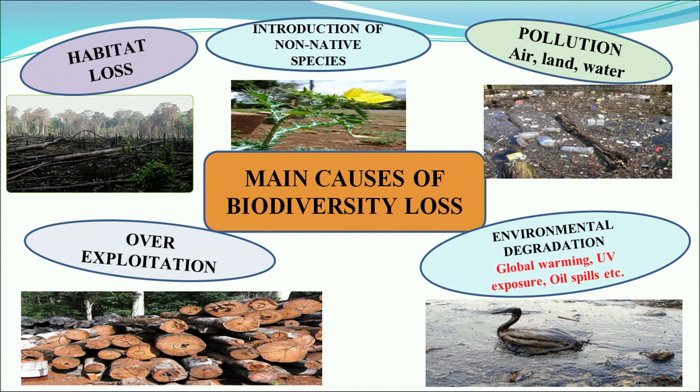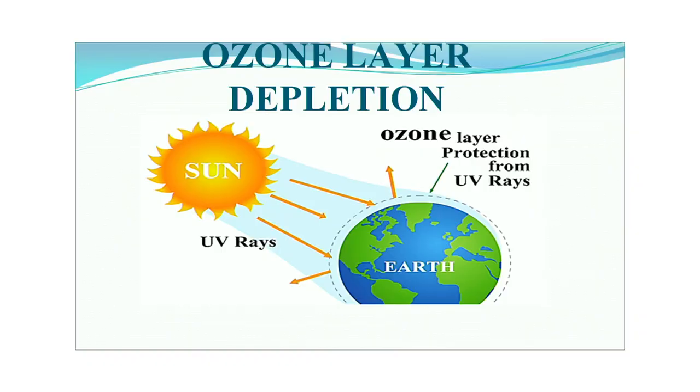Over-exploitation is another cause — for example, if we catch too many fish species and do not let them breed naturally, the entire species may eventually go extinct. Habitat loss is also critical — when we clear forest lands for industrial and residential requirements, the organisms that originally inhabited them have nowhere to go and ultimately enter the extinction list.